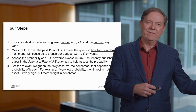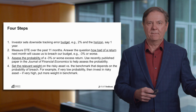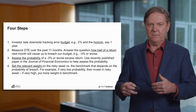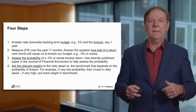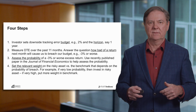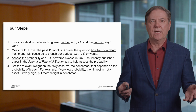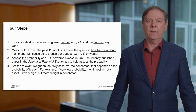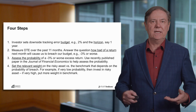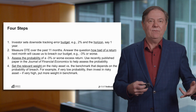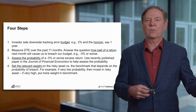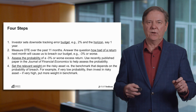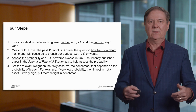Number two: look back 11 months and actually calculate the downside tracking error. Then ask the question: how bad does the return for my portfolio need to be in the next month — the 12th month — for me to exceed my downside tracking error budget? Maybe you figure out that it's minus three percent or less. Step three: figure out what the probability is of getting a minus three percent return or worse.